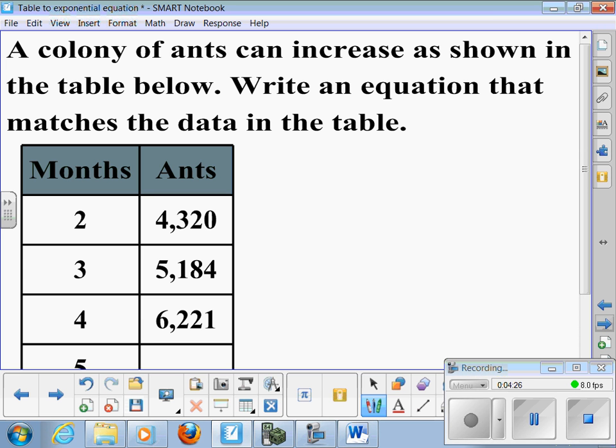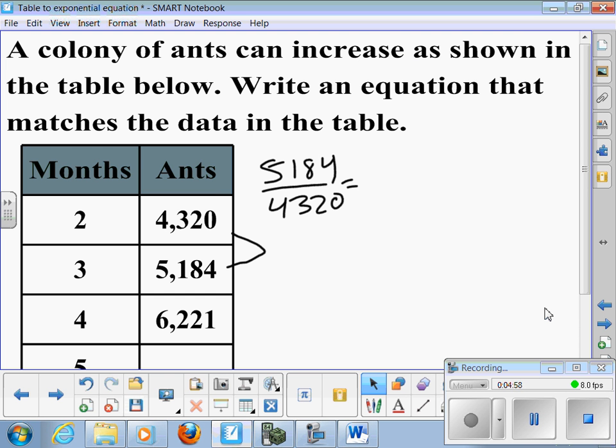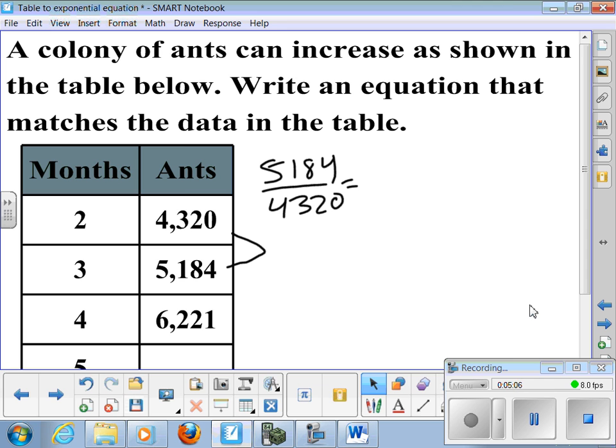A colony of ants can increase as shown in the table below. We could write an equation from here also, if it's exponential. So 5,184 divided by 4,320.